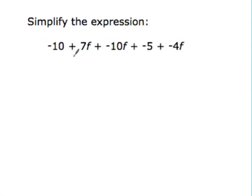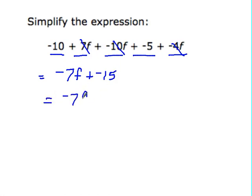Okay, not all of these terms are like. We have some f terms here. Let's do those first. So 7 plus negative 10 is negative 3. Negative 3 plus negative 4 is negative 7f. If you want to mark them out, say you're done with them. Negative 10 plus negative 5 is negative 15. So we can put plus negative 15. But I think it looks better if you say negative 7f, plus the negative, same thing as minus 15.